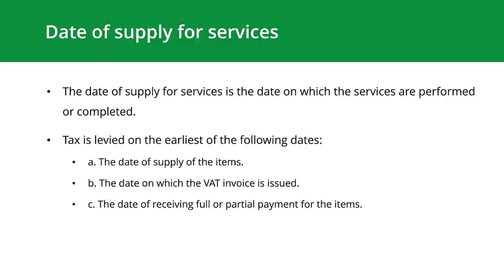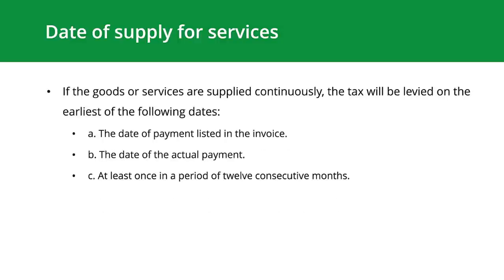Date of supply for services: the date of supply is the date on which the services are performed or completed. Generally, tax is levied on the earliest of these three dates: the date of supply of items, the date on which the VAT invoice is issued, or the date of receiving full or partial payment for the items. If goods or services are supplied continuously, tax is levied on the earliest of: the date of payment listed in the invoice, the date of actual payment, or at least once in every 12 consecutive months.